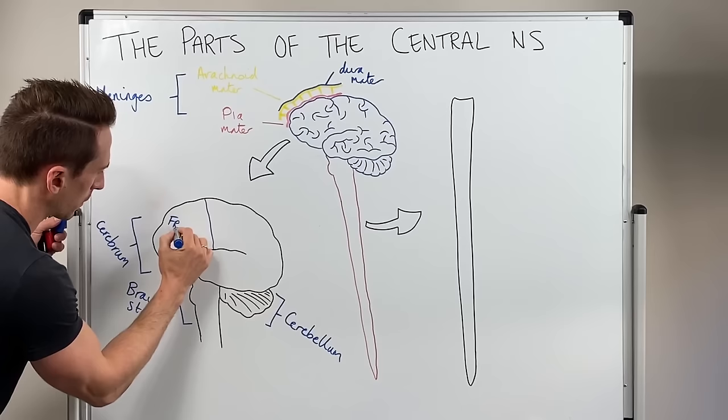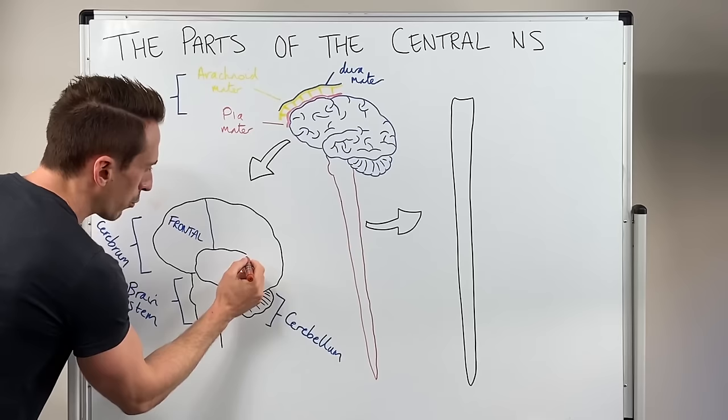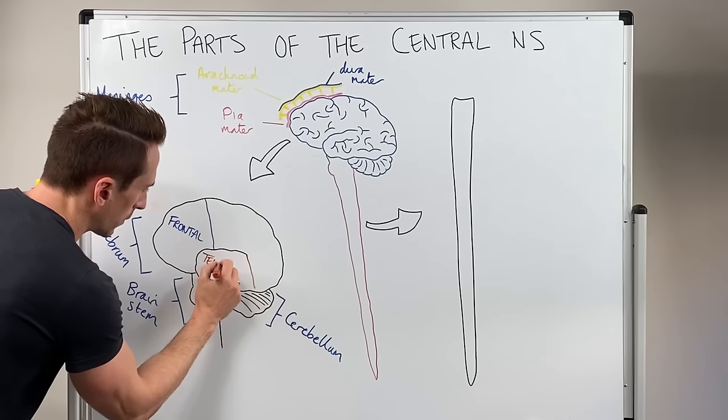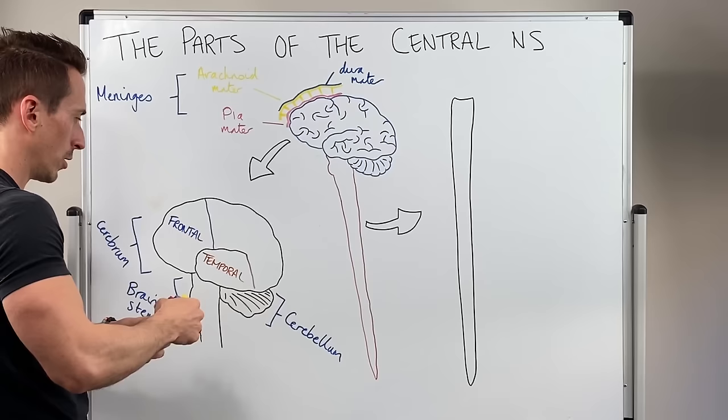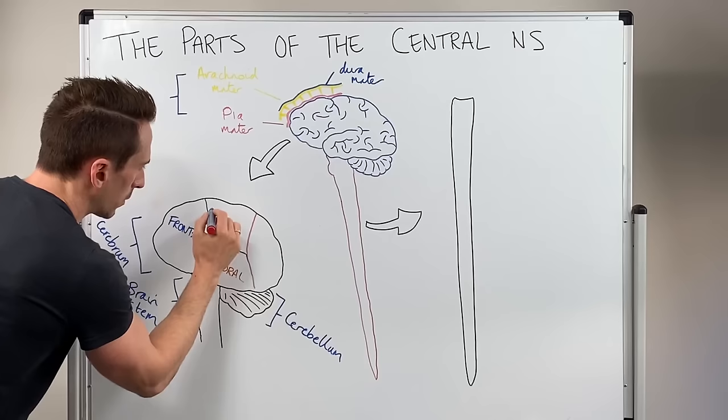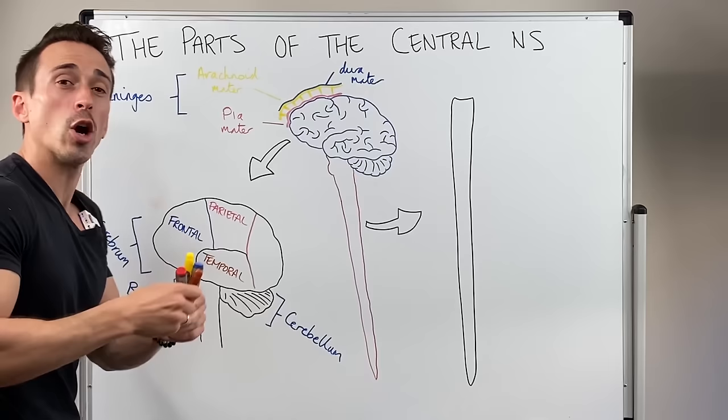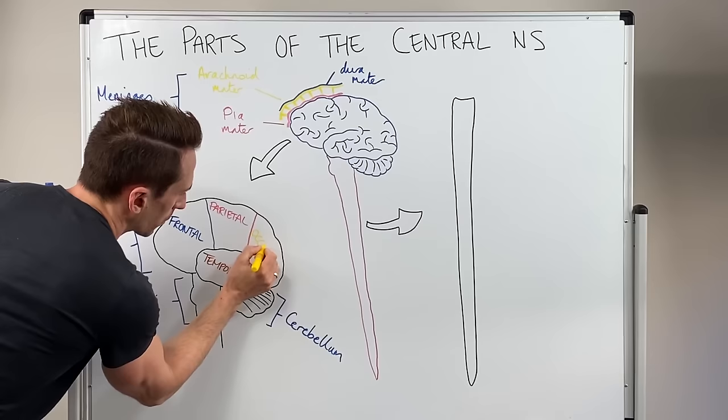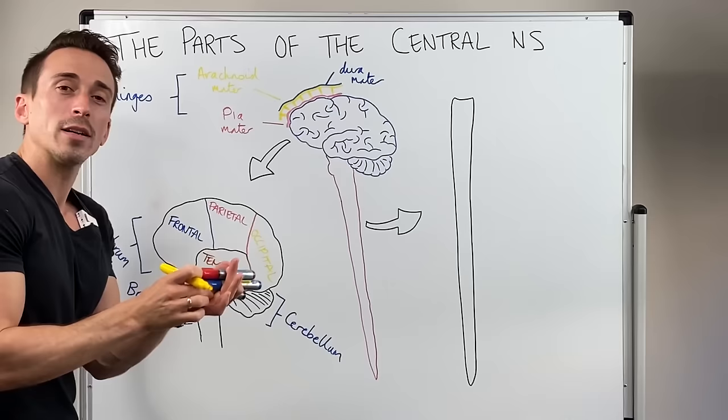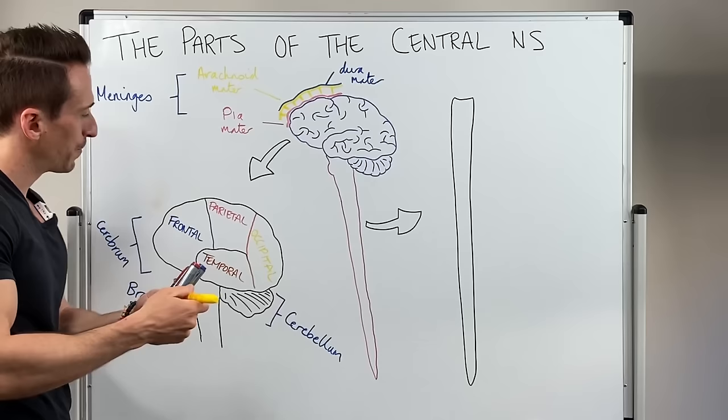We've got the frontal lobe. We've got the temporal lobe. We've got the parietal lobe. And we've got the occipital lobe. And what you'll find is that the bones of the skull that overlay them have the same particular names.